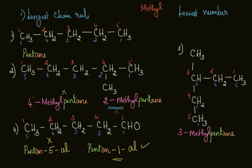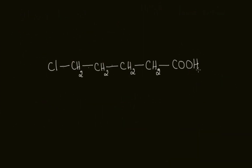When the functional group is at position one, we conventionally omit writing the '1' and just write 'pentanal.' This is why we chose the lowest number rather than the highest: for most organic compounds with a functional group, assigning it position one means we can drop that locant entirely and avoid writing names like pentane-5-al or 10-oic acid. In the next video, we will learn how to name compounds that have both a prefix and a suffix.